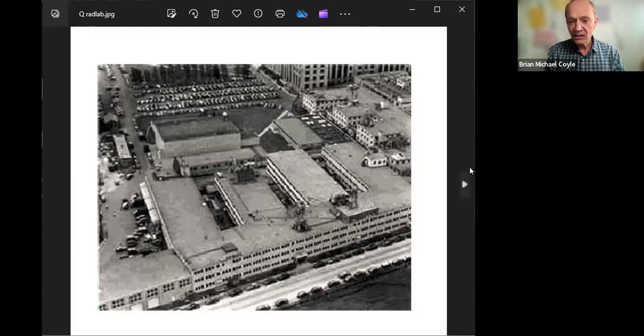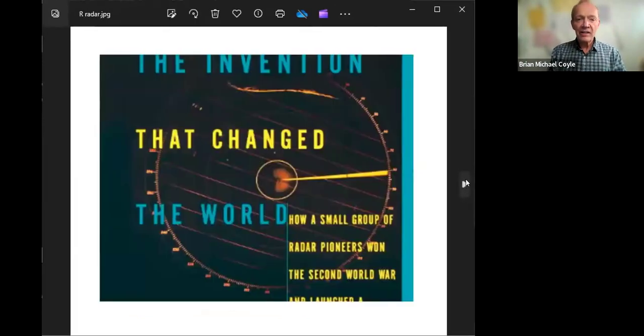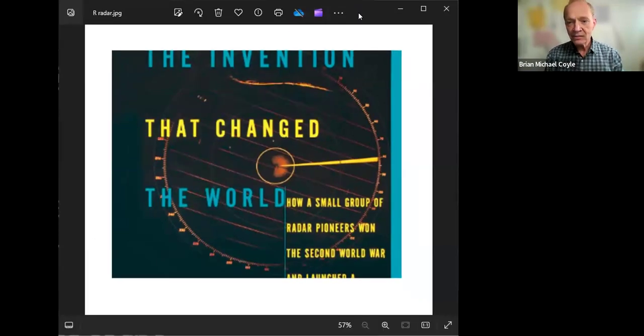Lawrence is the guy who developed the cyclotron at Lawrence Labs here in Berkeley. Within a year, the MIT Rad Lab had invented radar that could detect U-boats and target them. It spotted German airplanes before they reached England and enabled cover for D-Day. It has been said that the atomic bomb ended World War II, but radar won it.